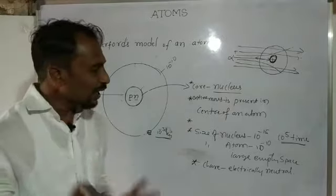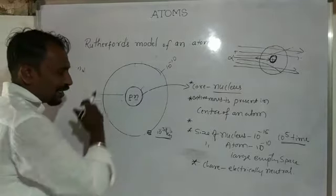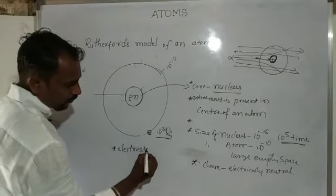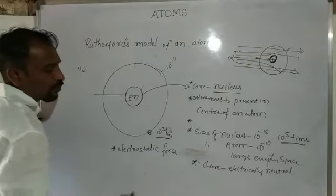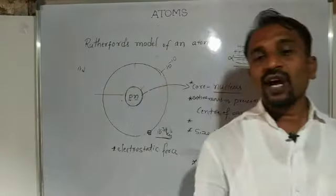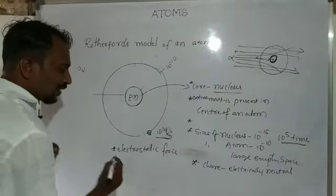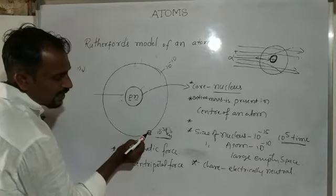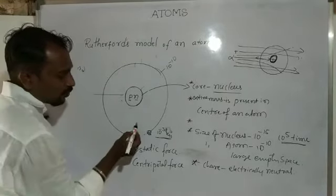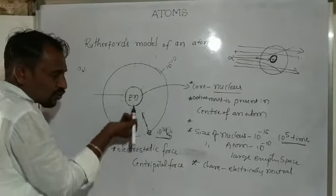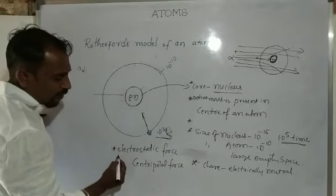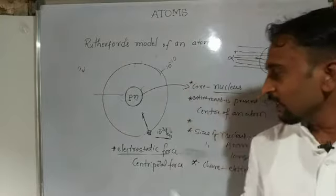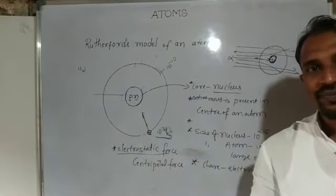Electrons revolve around the nucleus because of the electrostatic force. This electrostatic force provides the centripetal force — it acts like a centripetal force. The electron requires a force directed towards the nucleus, or the center of the atom, and that force is provided by the electrostatic force. This is why the electron revolves around the nucleus.